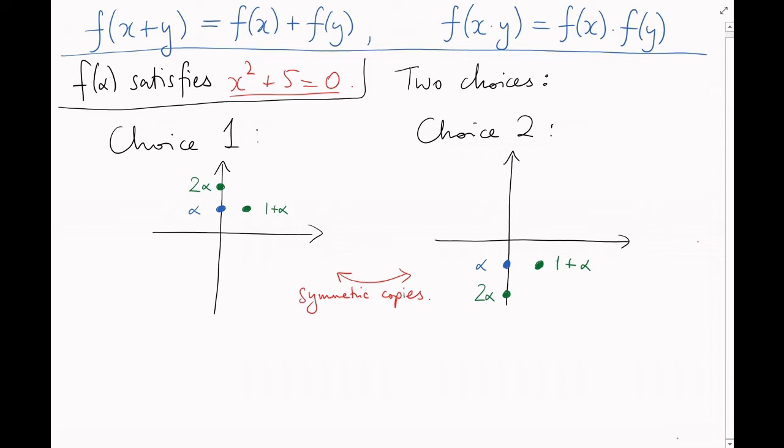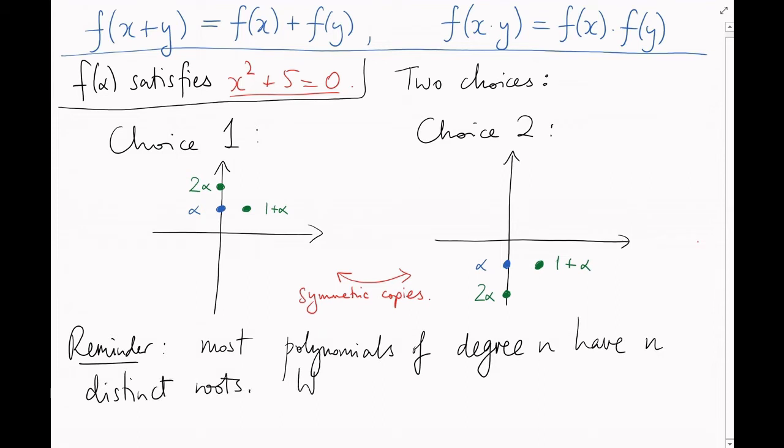Now, if at this point it feels like I'm just reminding you that most numbers have two distinct square roots, I suppose I am. In fact, I'd like to remind you more generally that most polynomials of degree n have n distinct roots. But it's going to be important to keep track of all of these roots at once. And here's why.